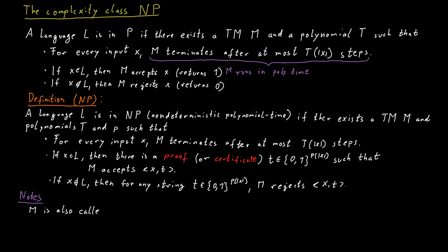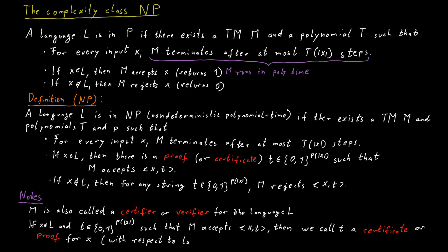We call M a certifier or verifier for the language L. And if X is in the language and we have a bit string T such that the verifier accepts the input X and T, then we call T a certificate for X or a proof for X with respect to the language L and this verifier M.